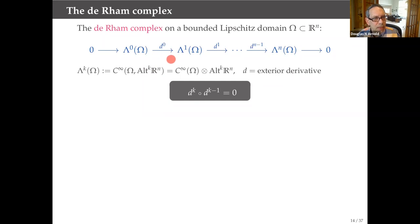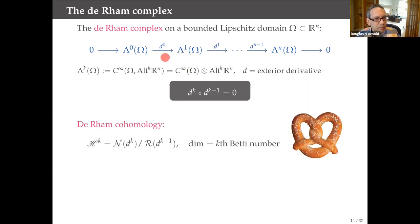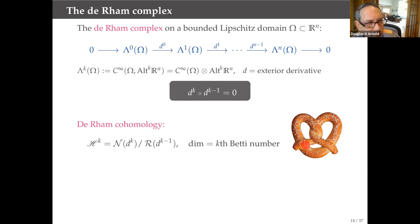From the fact that d² = 0, the null space of the second d contains the range of the first d as a subspace, and you can consider the quotient space — that's the cohomology group. The dimension of that group is the most fundamental topological invariant of the domain: it's the number of k-dimensional holes. For k = 1 on a pretzel, this Hk would be of dimension three, because there are three holes in the pretzel. That's what a topologist uses the de Rham complex for at the basic level.